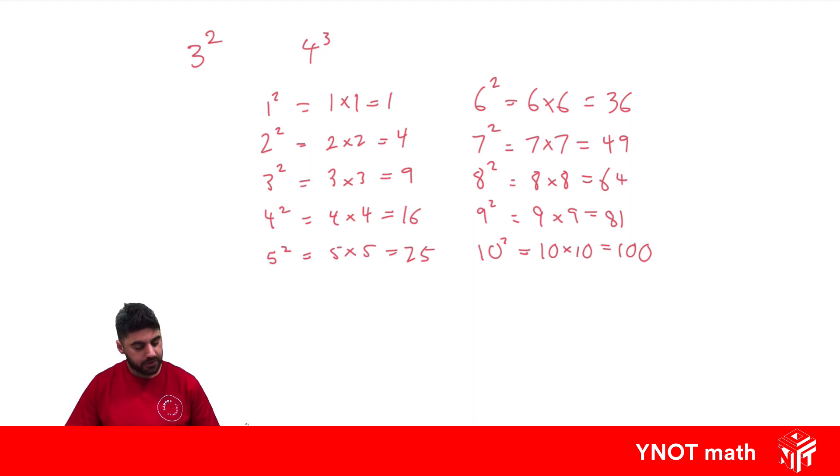Now we're going to look at square roots. And a square root is the opposite of a square. So when we have the square root of 1, that means what number do we need times by itself to get this number inside the square root? And the square root has this symbol here, kind of looks like a division, but it's got more of a tick on the end. So what number multiplied by itself equals 1? Well, we know 1 times 1 equals 1, so the answer to this is 1.